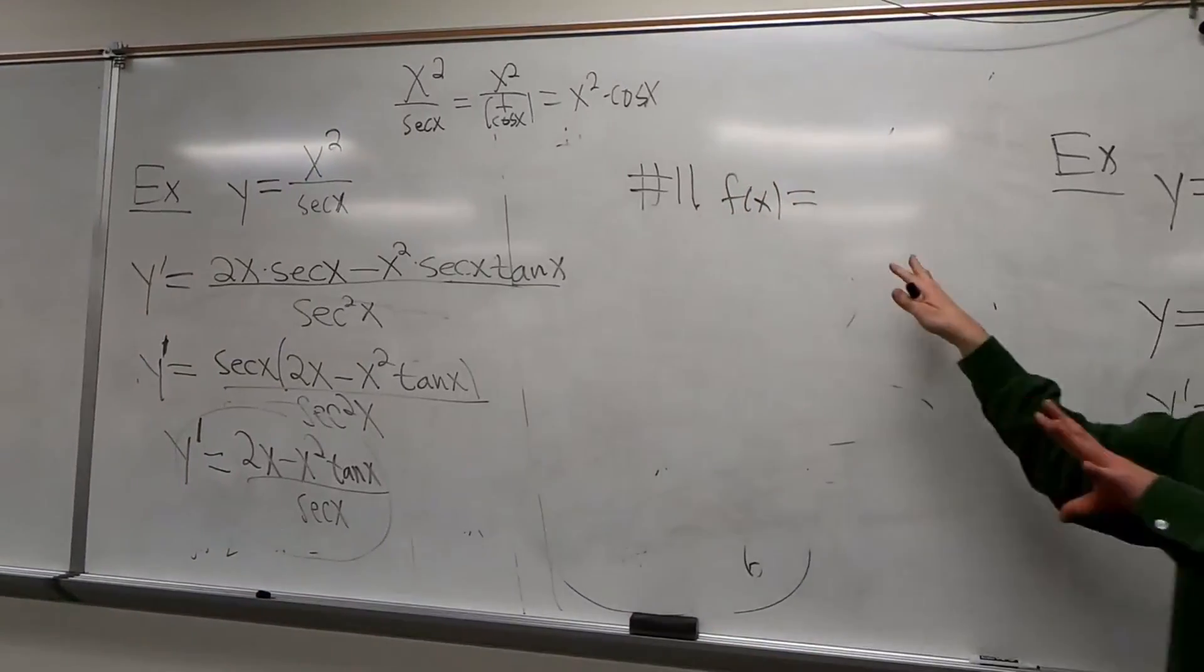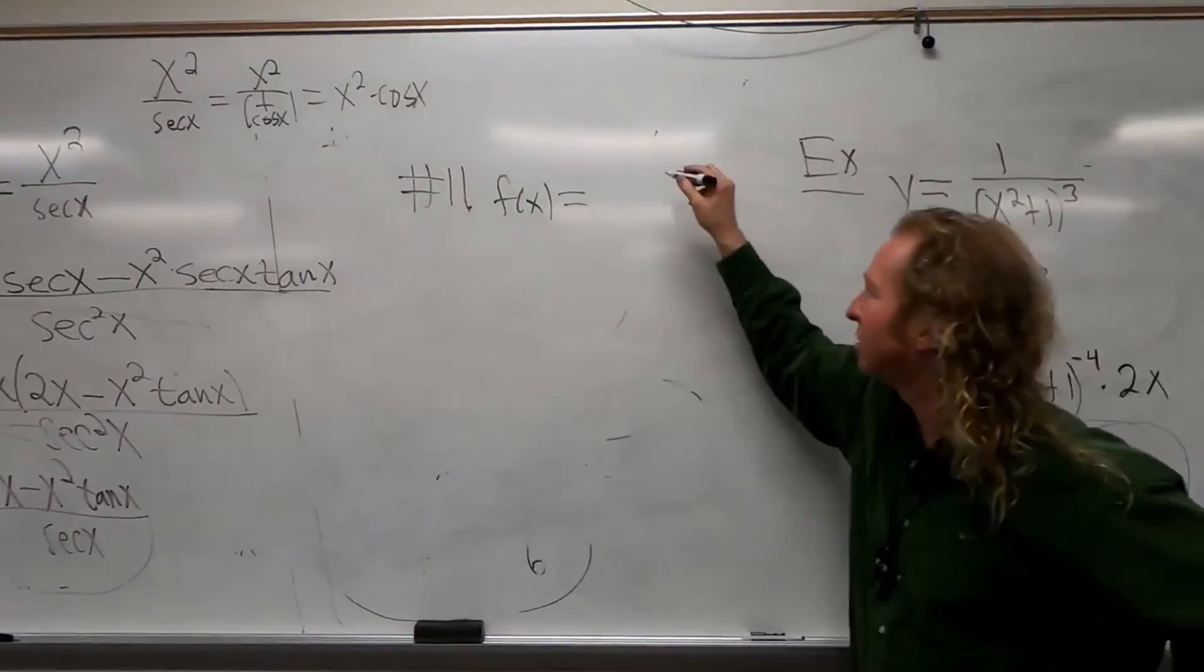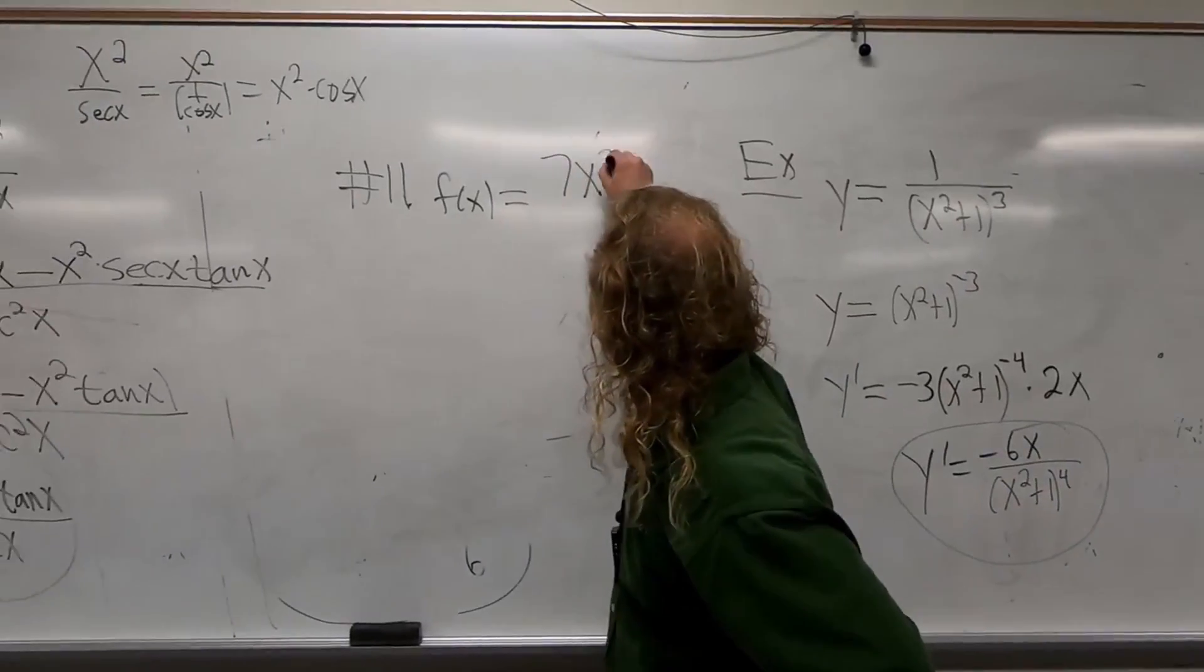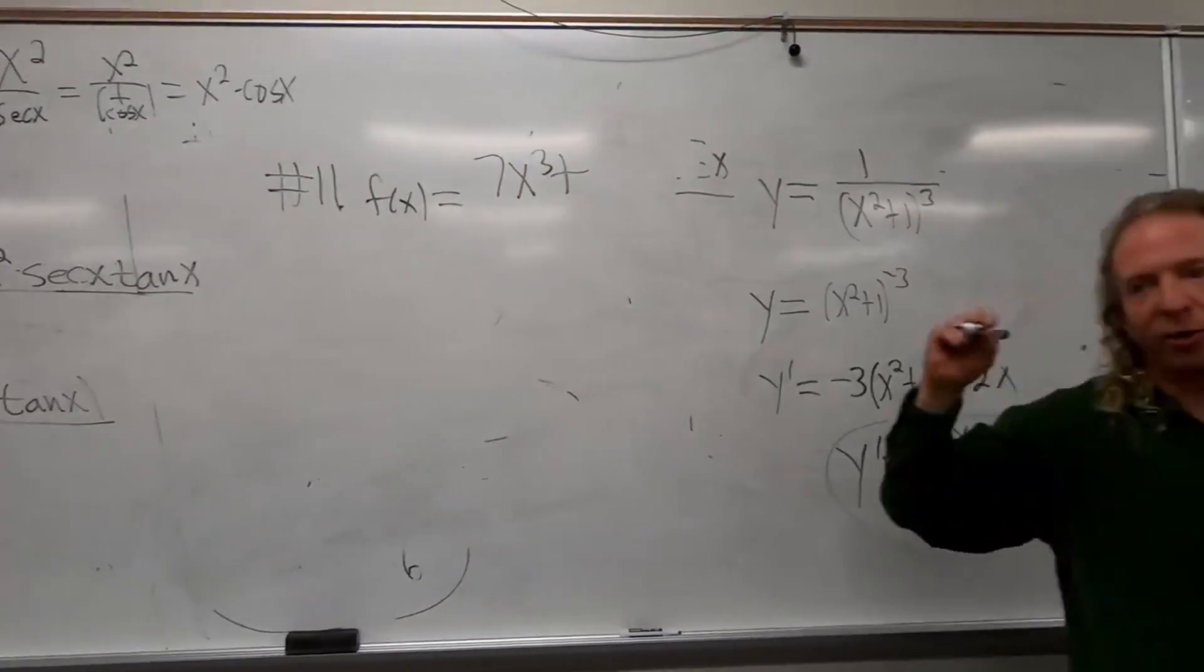Usually you have this strategy show up on your test. 7x cubed plus 3x squared over x.